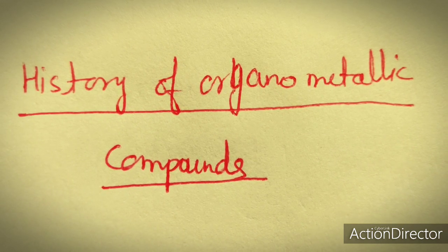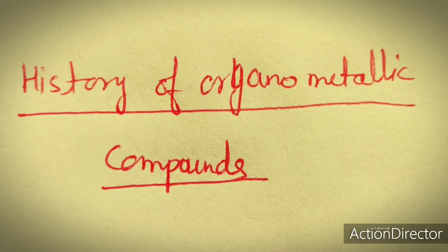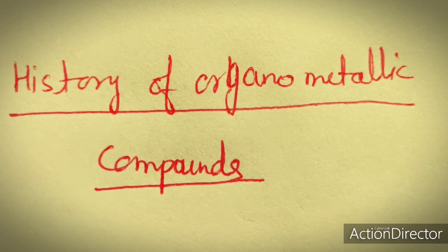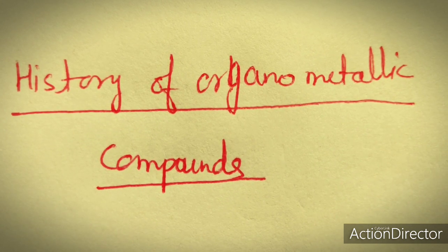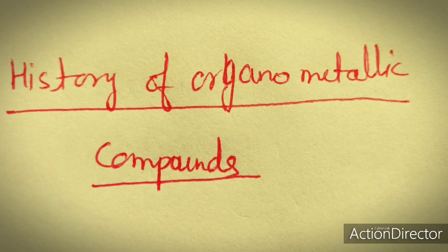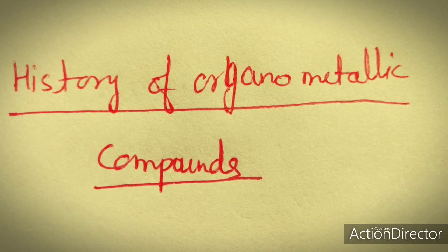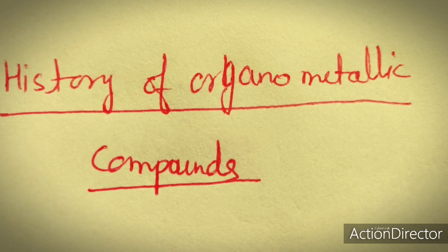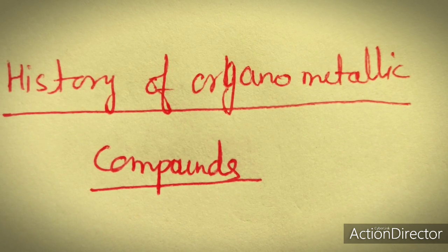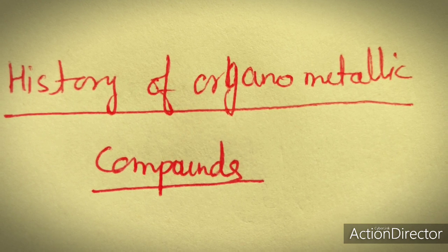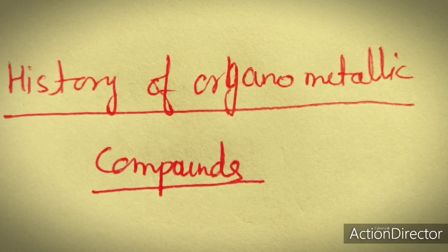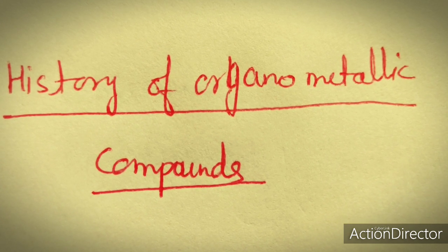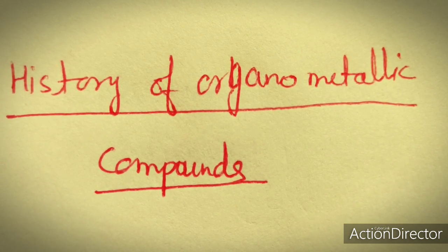Organometallic compounds are compounds that have at least one metal-carbon bond. That metal may be an alkali metal, an alkaline earth metal, a metalloid, a transition metal, or an F-block element. Simply put, organometallic compounds have at least one metal-carbon ligand.